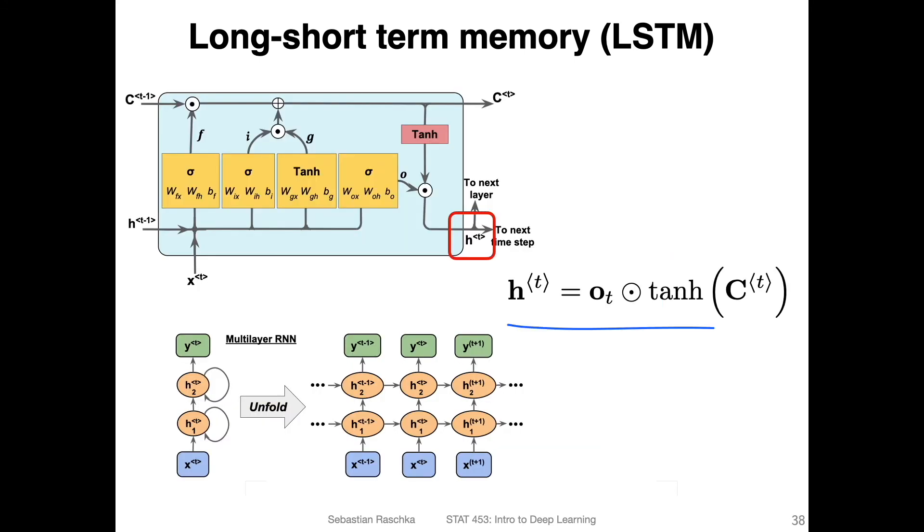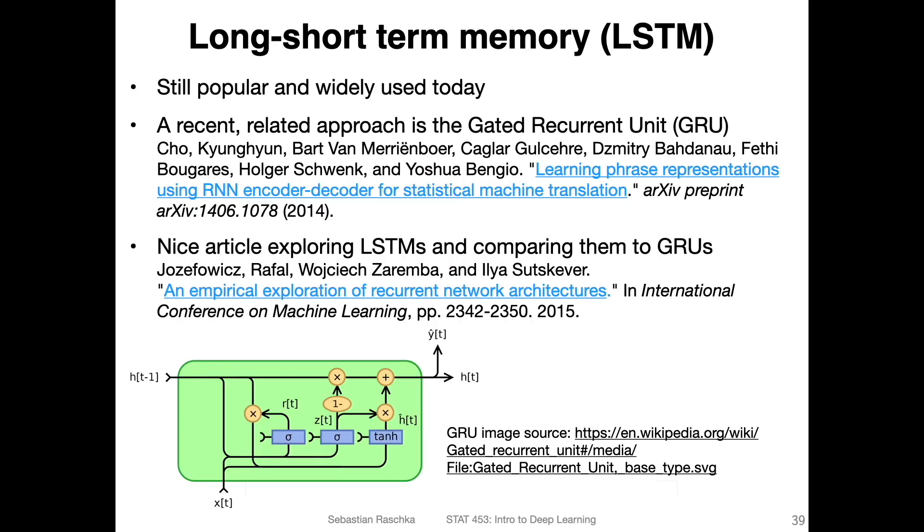The next hidden state is computed as the output gate times the tanh of the cell state. This is essentially it. It's a pretty complicated setup. There's some justification behind it embedded in the original paper if you're interested in reading about that. In practice, this sounds very obscure, but it works well in practice. That's probably why it stood the test of time, why people use it. It's widely used and popular.